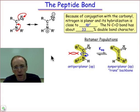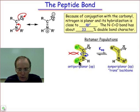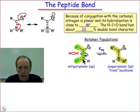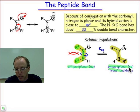A consequence of that π-type interaction is that there are really two rotomer populations. If we look at those alpha carbons — now represented as R1 and R2 — and we think about that carbon-nitrogen bond as having significant double bond character, we could imagine there would be cis, which we call anti-periplanar for peptide linkages, or trans, which we call syn-periplanar.